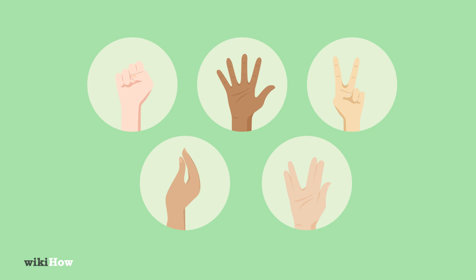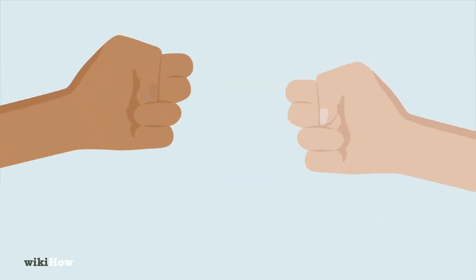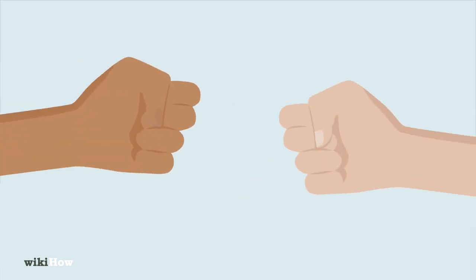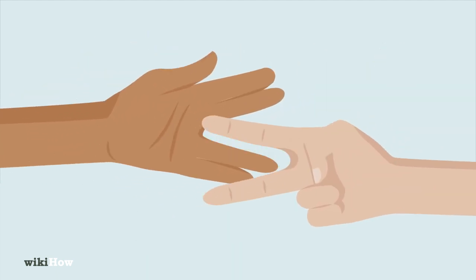Each hand signal wins against two of the other signals. Scissors cuts paper. Paper covers rock. Rock crushes lizard. Lizard poisons Spock. Spock smashes scissors.